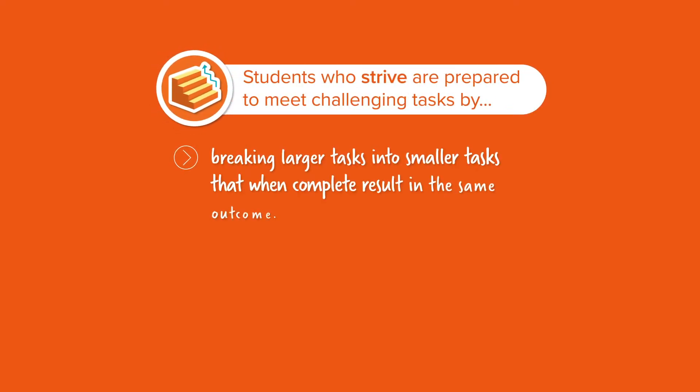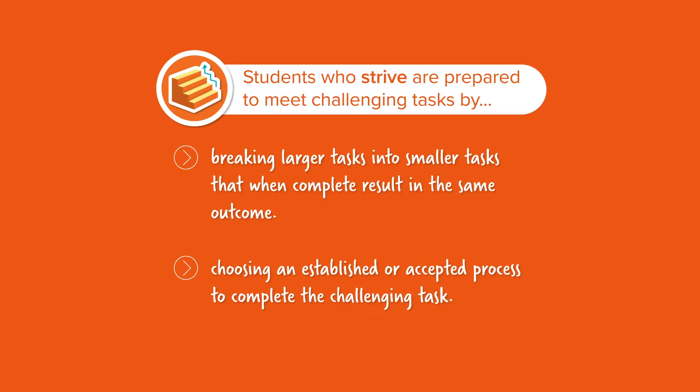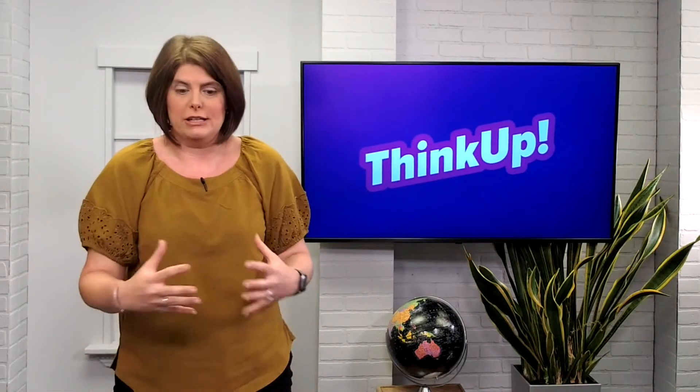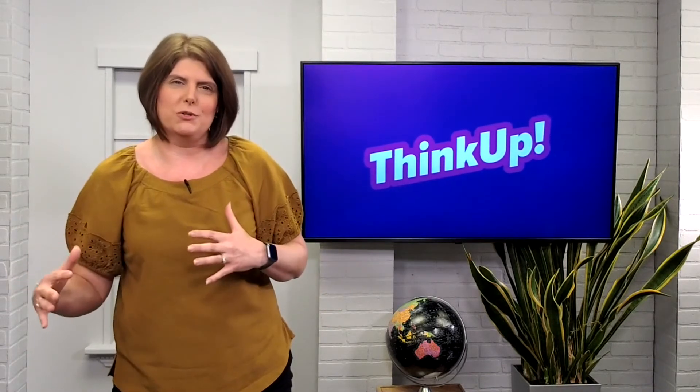So what does that classroom look like when Strive is in full bloom? Say a teacher provides a multi-step project — they can actually choose what they do. They may have a media project, a speech, a research paper, or some type of product. Being able to strive means that the student needs to understand how to complete all of the steps and not be overwhelmed. They can't complete the project all in one day, but they break it up into smaller steps.